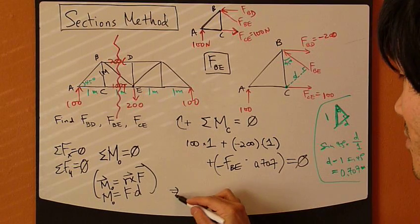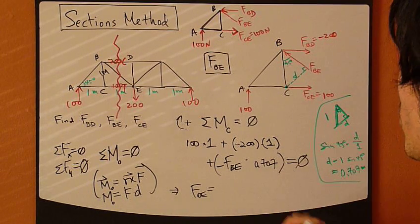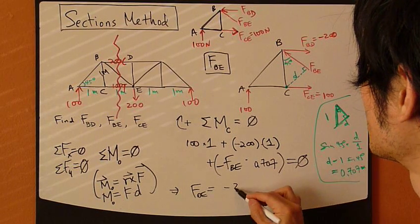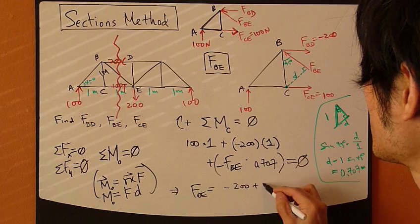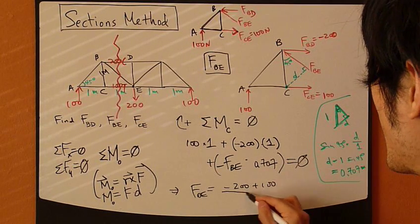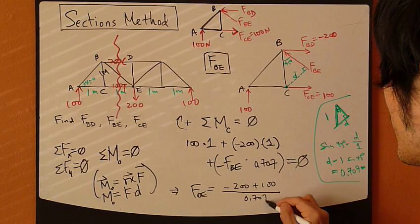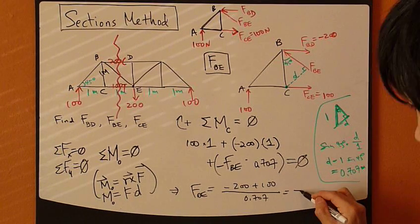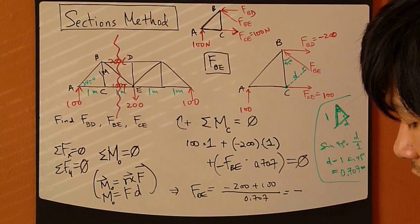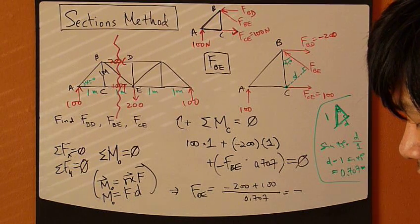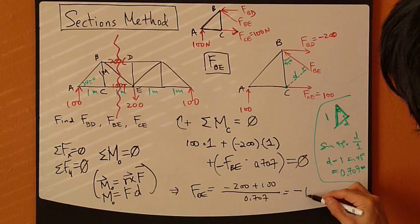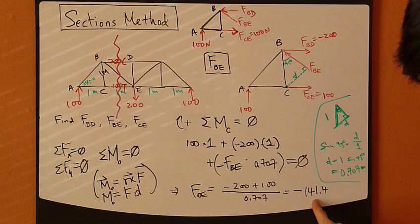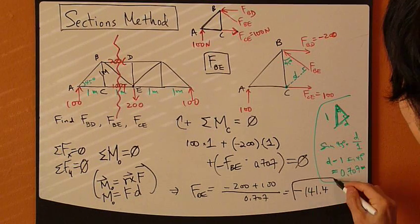Just crunch the numbers. FBE equals negative 200 plus 100 divided by 0.707. This is negative 100 divided by 0.707, which is negative 141.4, or negative square root of 2 times 100.